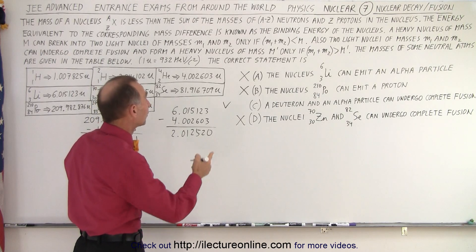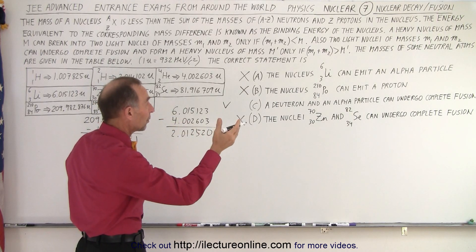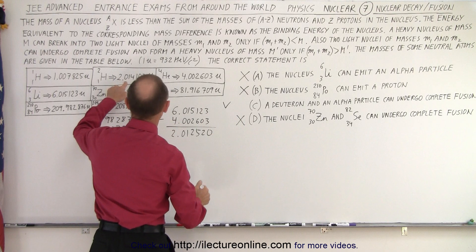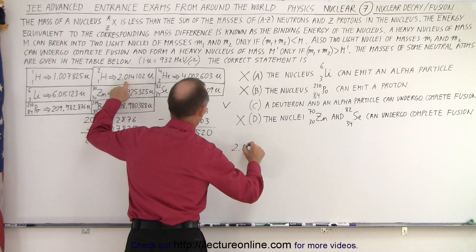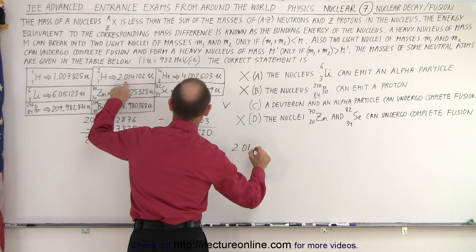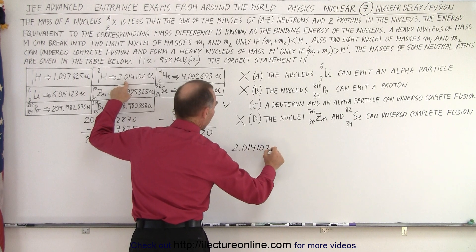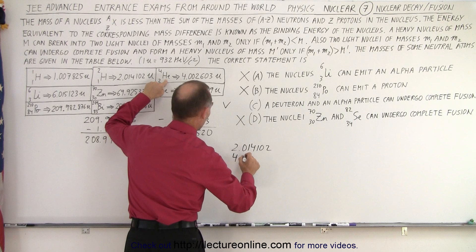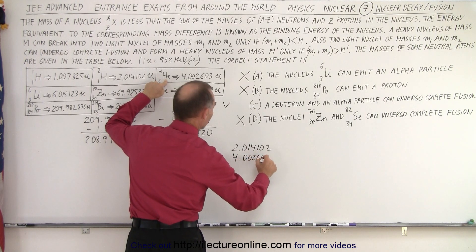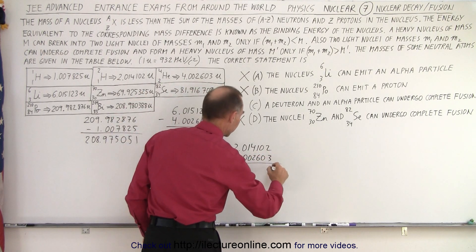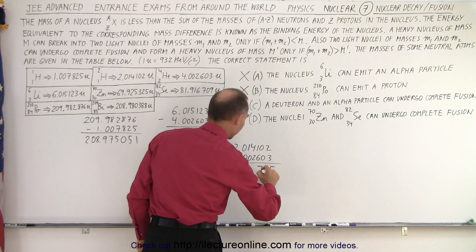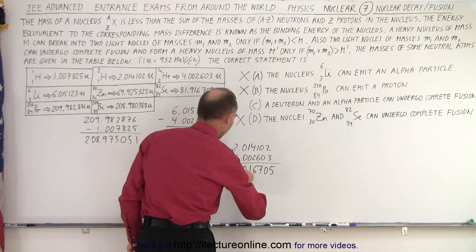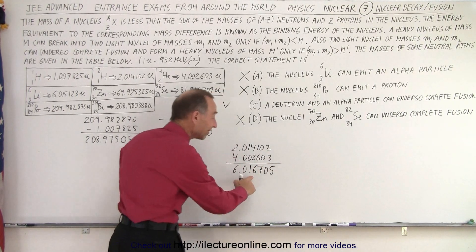Now, quickly, what we can do is we can check. So when we have a deuteron, which is this right here, that gives us 2.014102. And then we add that to an alpha particle, which is essentially helium, which is 4.002603. So let's add those together. That is 6.016705. And if this mass is, well, if it's less, we add the two particles together. No, it has to be more than the resulting end product, right?